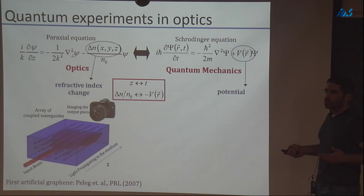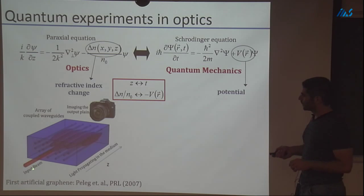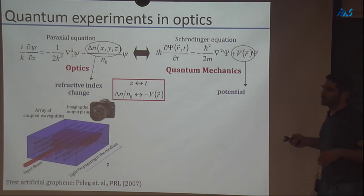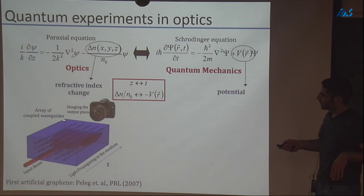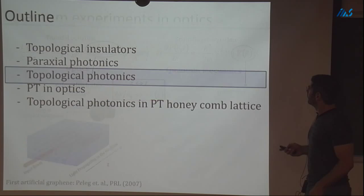To mimic a graphene sheet, we manufacture straight waveguides in a honeycomb lattice. Looking at a cross section at a fixed Z, you get an array of waveguides. We input some light and watch how it propagates along Z — propagation along Z is equivalent to looking at a 2D graphene sheet for a fixed time. We have a camera at the end of our sample and simply see the last facet.